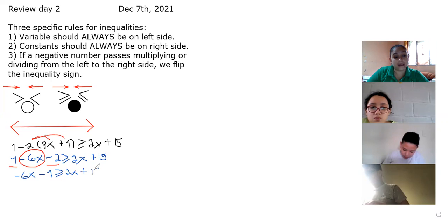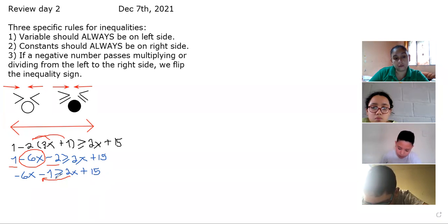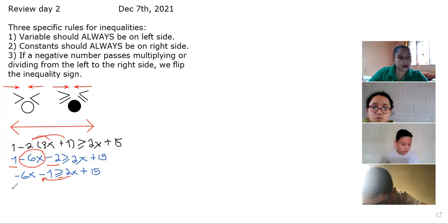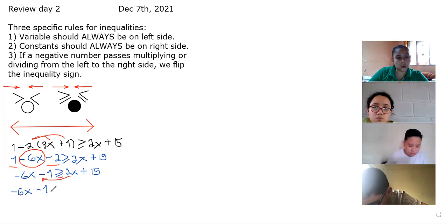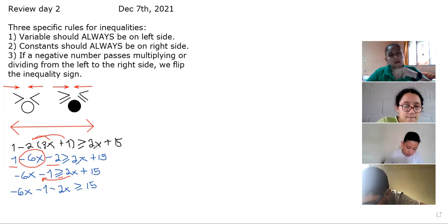Now we can pass variables to the left as our rule states. The variable 2x on the right side needs to go to the left with an inverse operation — it is added, so it goes negative. Remember to copy everything already on that side: negative 6x minus 1 minus 2x, greater than or equal to 15. Now all our variables are on the left and we need to move the constant.